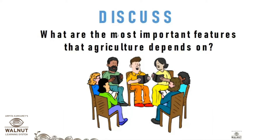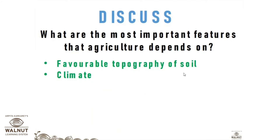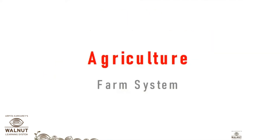What are the most important features that agriculture depends on? Agriculture actively depends on the favorable topography of soil and climate. Topography means a precise description of the surface features of the soil — whether it is suitable for cultivation or not. So we have to consider favorable soil conditions and climate.